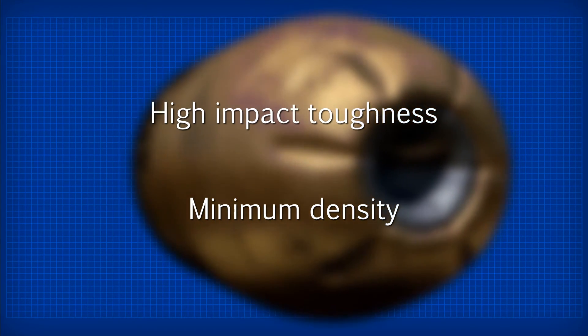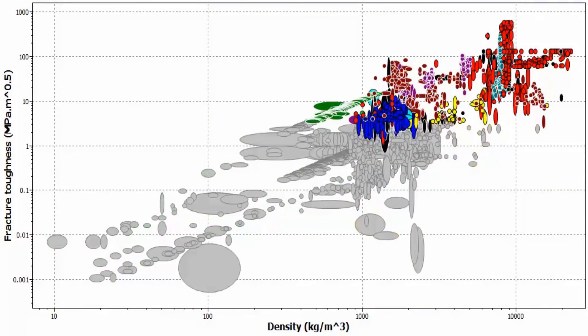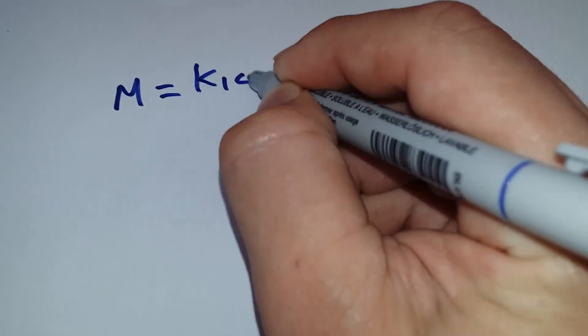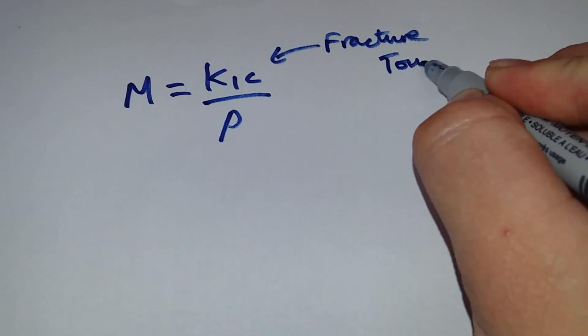We return to CES EduPack with this function, constraint, and objective, and derive the material performance index. In this case, we want to maximise the toughness and minimise the density, leading us to this equation.